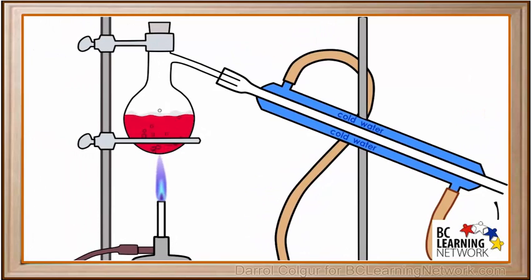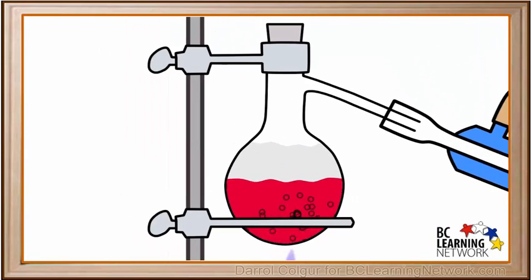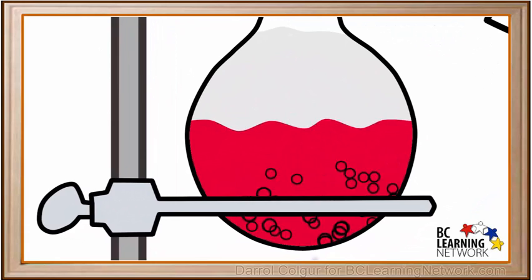After we start the Bunsen burner and heat the flask up to 100 degrees, the mixture starts to boil. We'll zoom in closer.